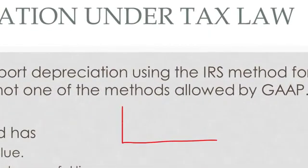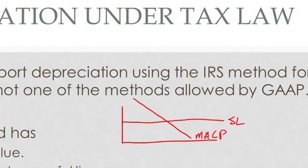Let's just say we use straight line for GAAP. We would record a steady amount each year under straight line depreciation. Under MACRS, you would record a lot of depreciation up front and very little towards the end. Overall, you're going to record the same amount of total depreciation, or very close to it, between the two methods. But for the time being, it causes a difference between your GAAP income and your tax income. Up here, you've got a higher depreciation expense, so your IRS income is lower.